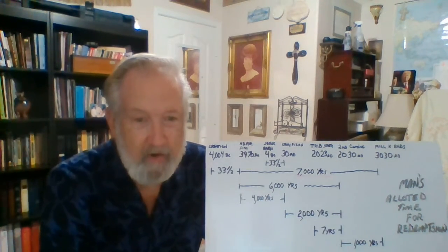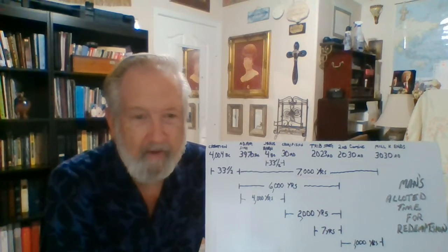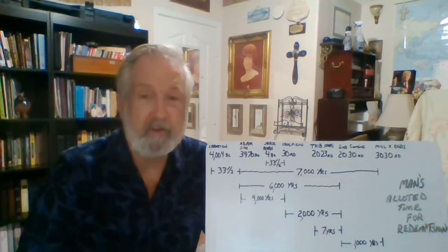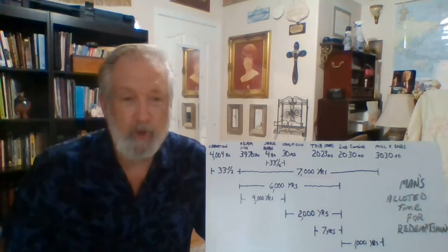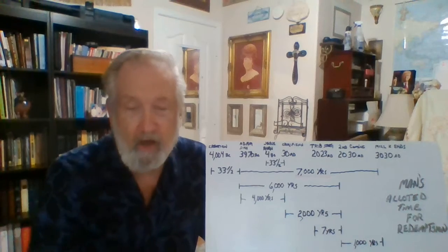And then down here on the chart, we have a period of seven years that's listed there that you can see, as well as a time period of the millennial kingdom, which is a thousand years.